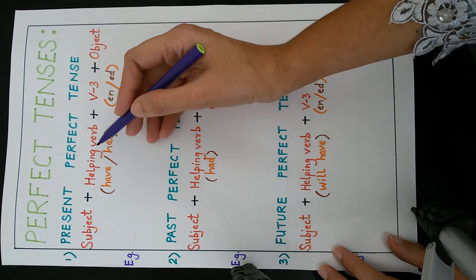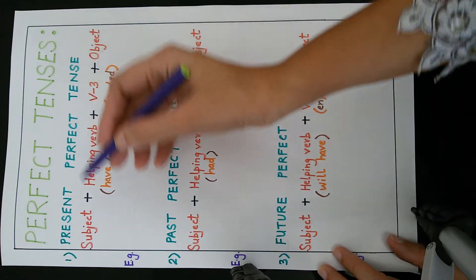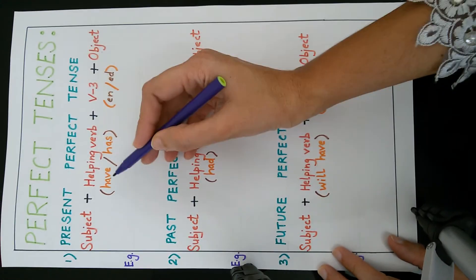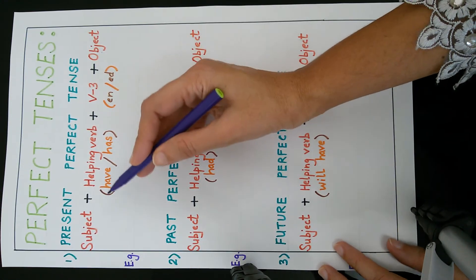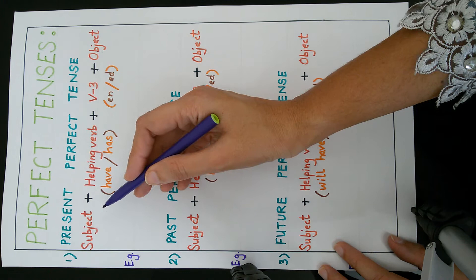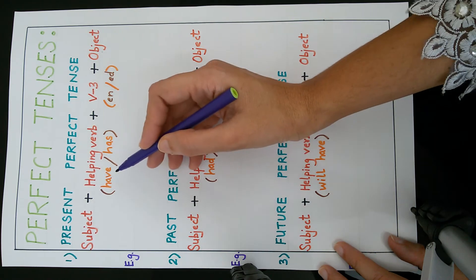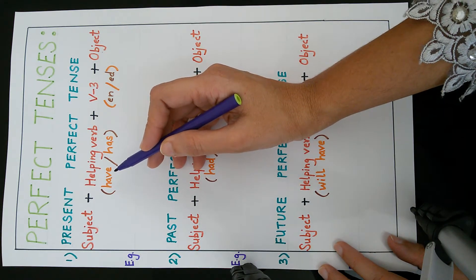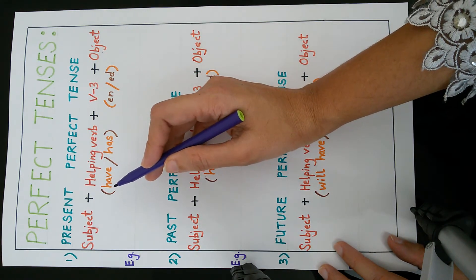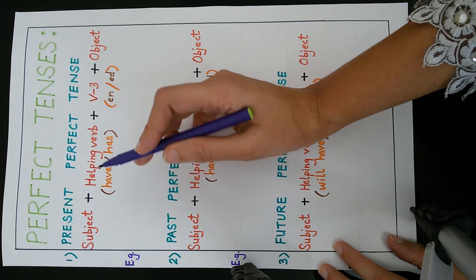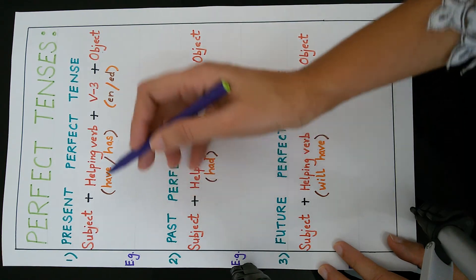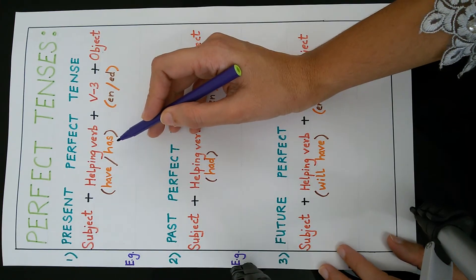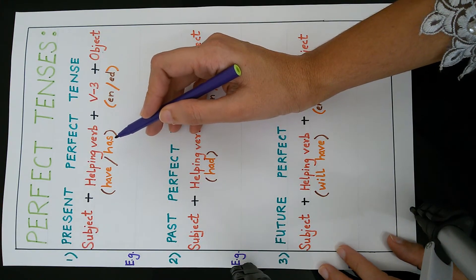The helping verb used in present perfect tense is 'have' or 'has', and it depends on the subject. If the subject is I, you, we, or they, 'have' will be used. If the subject is he, she, or it, 'has' will be used.